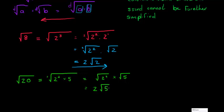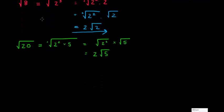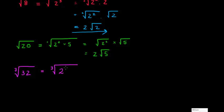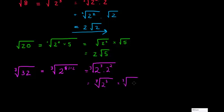Let's do a cube root example: the cube root of 32. 32 can be written as 2 to the power of 5. Now 5 is not divisible by 3, but 5 can be written as 3 + 2, so I can break it up into 2³ × 2². This is all still inside the cube root, and now I can write this as the cube root of 2³ times the cube root of 2².